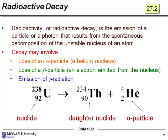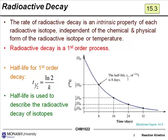And the classic example is radioactive decay. Radioactivity is the emission of a particle or a photon that results in the spontaneous decomposition of an unstable nucleus. You can get things like alpha particles, beta particles, gamma radiation being emitted during these events, one of the classic cases being uranium. The rate of radioactive decay is an intrinsic property of each isotope, independent of the chemical and physical form of the radioactive isotope or the temperature.